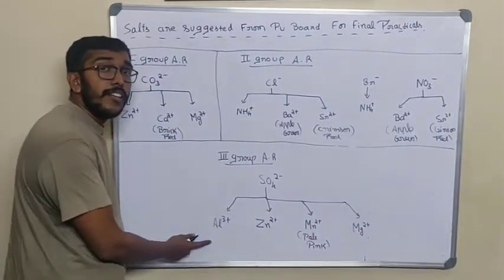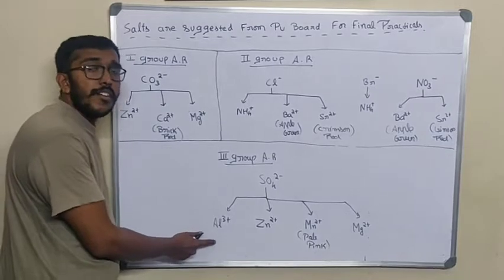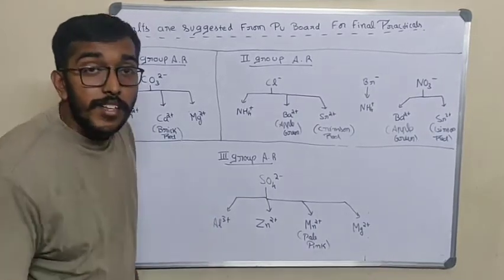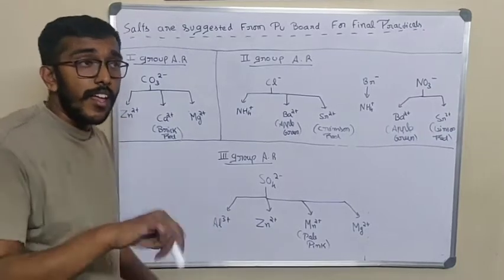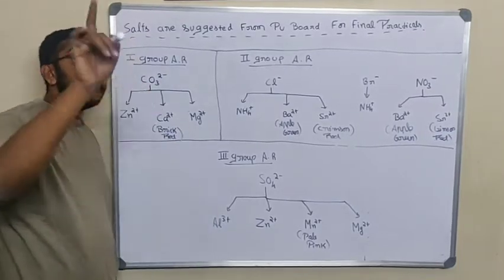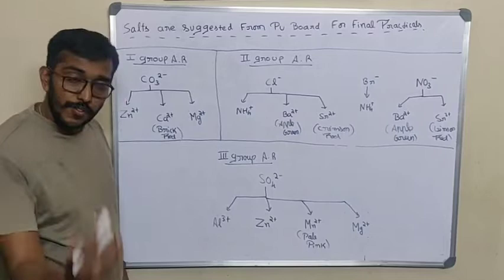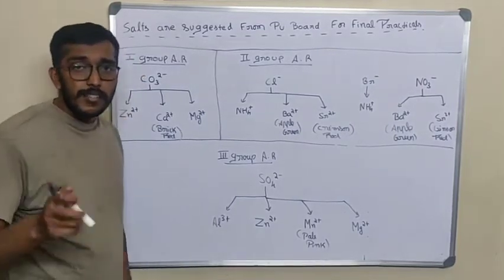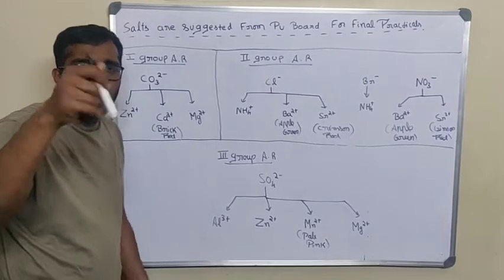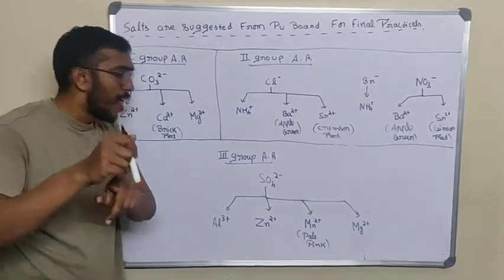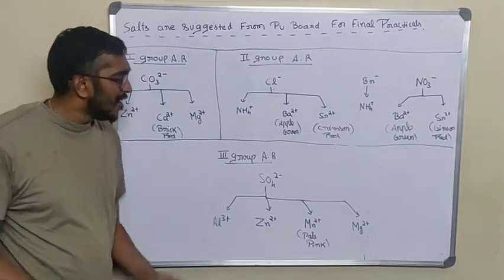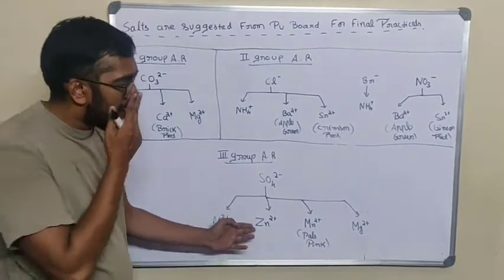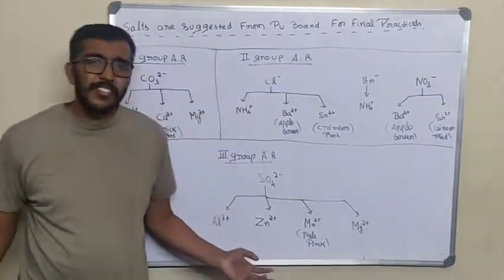The third group is salt solution plus NH4OH plus NH4Cl crystal. You will get white gelatinous PPT. With NH4Cl solid, you will get white gelatinous PPT. Shake the PPT with water. If it clears, it's very simple.